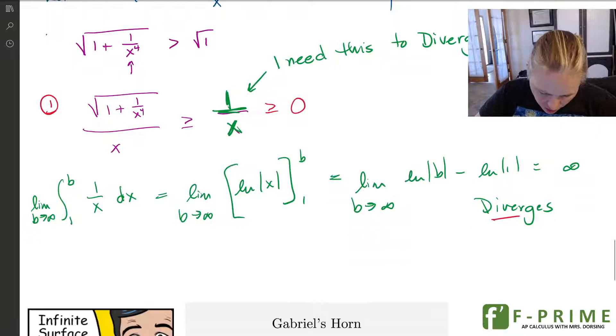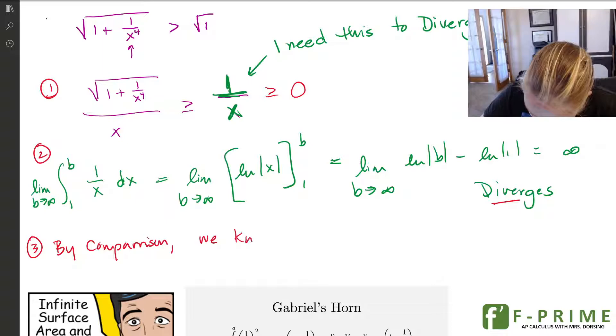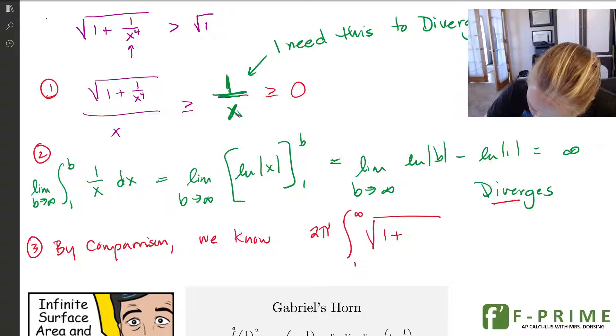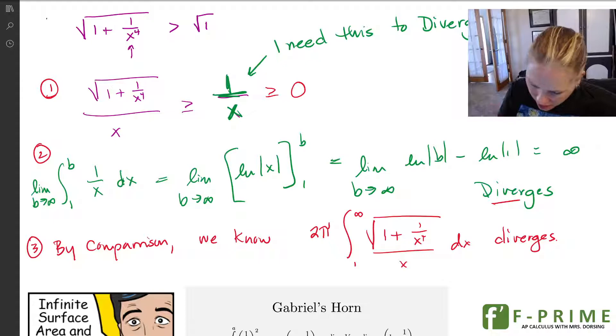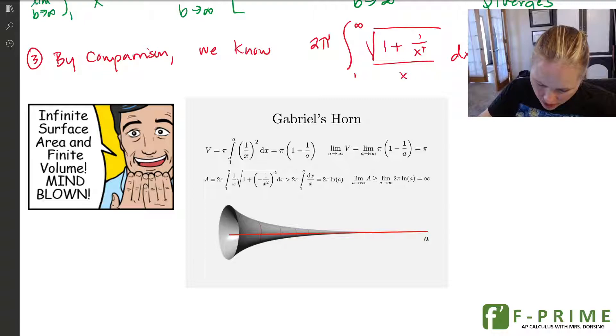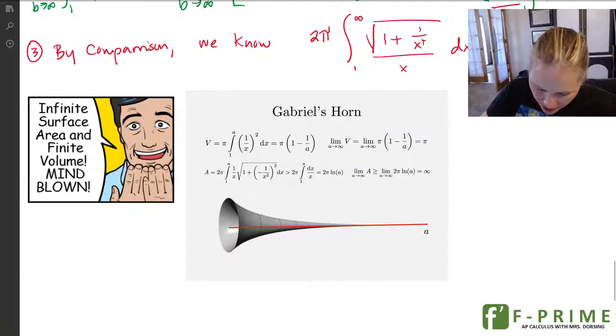So we've shown that it, and then number three, by comparison, we know that this integral, 2π, and then 1 to infinity, 1 plus 1 over x to the 4th over x dx diverges. So, the nice thing is, we couldn't find the area, even if we wanted to. Even if we knew how to do that integral, we couldn't do it. So what we've just shown is that Gabriel's horn is this really cool scenario where the volume actually works out, and the volume is a finite thing. It's a countable thing, but the surface area is infinite. So you have an infinite area enclosing a finite volume.